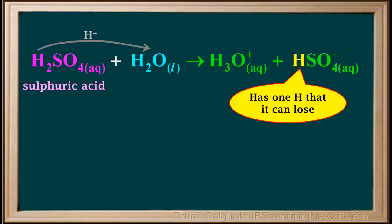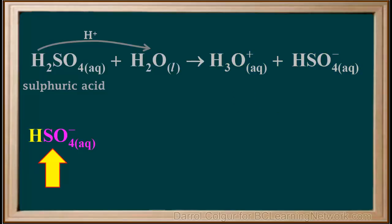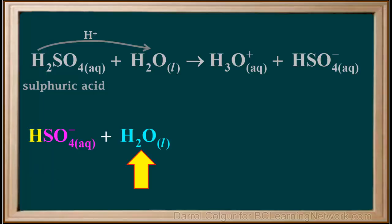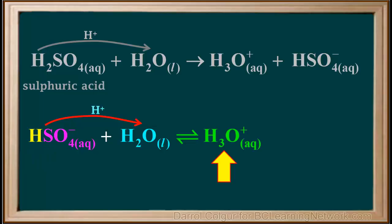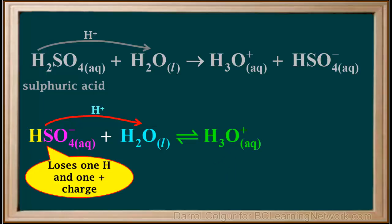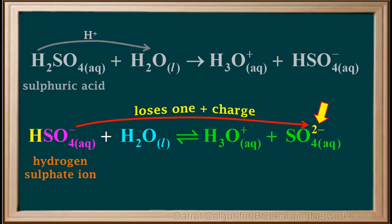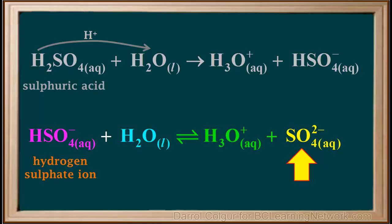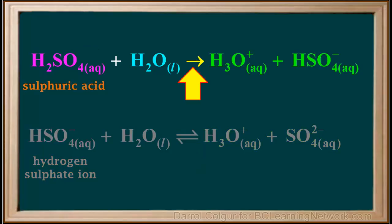HSO4- has one hydrogen it can lose. In the second step, HSO4- reacts with water and donates its proton, producing another hydronium ion. HSO4- loses one H and one positive charge, leaving SO4 with a charge of negative two — the sulfate ion, SO4 2-. SO4 2- has no hydrogens to donate, so this is the last step. The second step uses a double arrow indicating equilibrium, while the first step uses a single arrow — meaning 100% of the sulfuric acid is converted to hydronium and hydrogen sulfate ions.